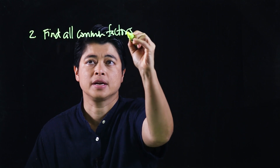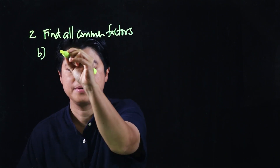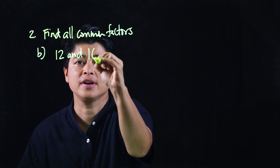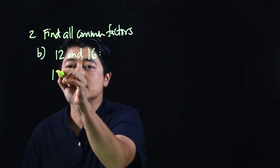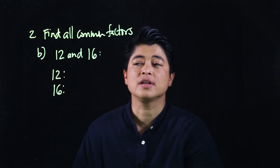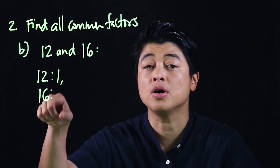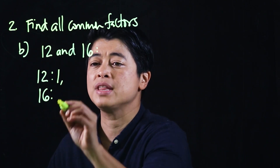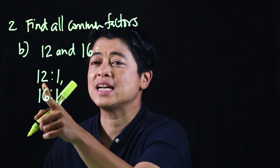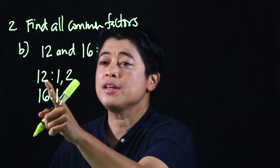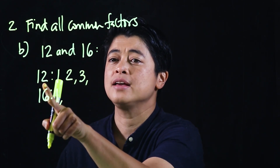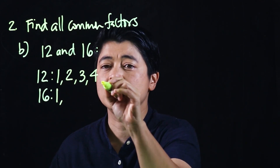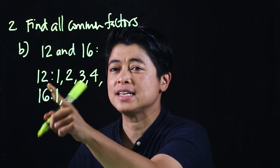More problems from page 41, problem number 2: find all common factors of pairs of numbers. For letter b, we want the common factors of 12 and 16. The best approach is to write down each of the factors. For 12: 1 is a factor, 2 is a factor since it's even, 3 is a factor since 12 is divisible by 3, and 4 is also a factor.